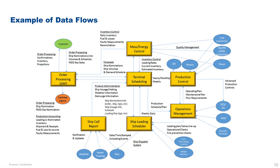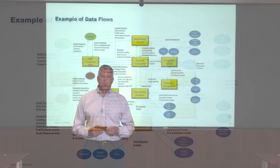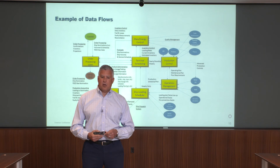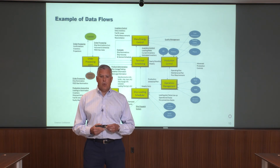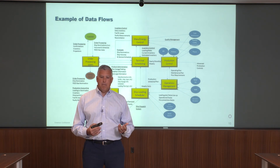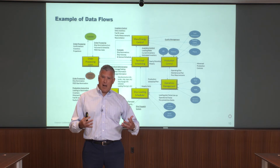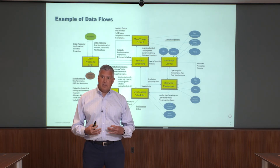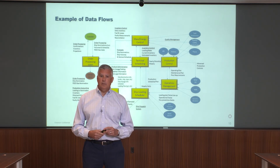An example of a data flow — taking all of those different data models and use cases and combining them into one — might look like what we have here on the screen. This is an example from an LNG terminal where we look at terminal scheduling, production control, mass balances, operations management, and so forth, combining all those different data models and use cases into one.